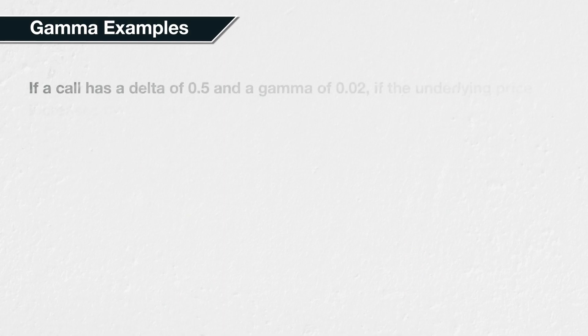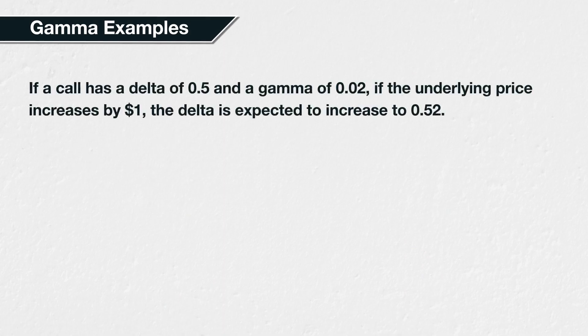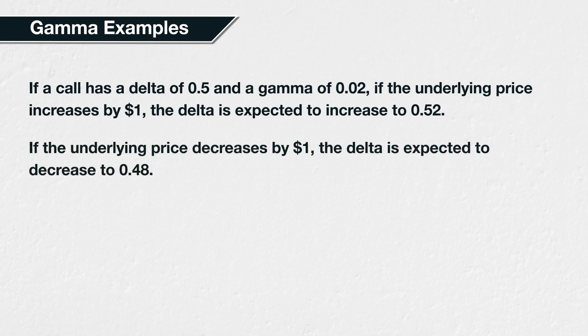If a call option has a delta of 0.5 and a gamma of 0.02, if the underlying price increases by $1, the delta of the option is expected to increase by 0.02 to 0.52. If the underlying price decreases by $1 instead, the delta of this same option is expected to decrease to 0.48. We can see here the expected behaviour of getting longer as price increases, and shorter as price decreases.